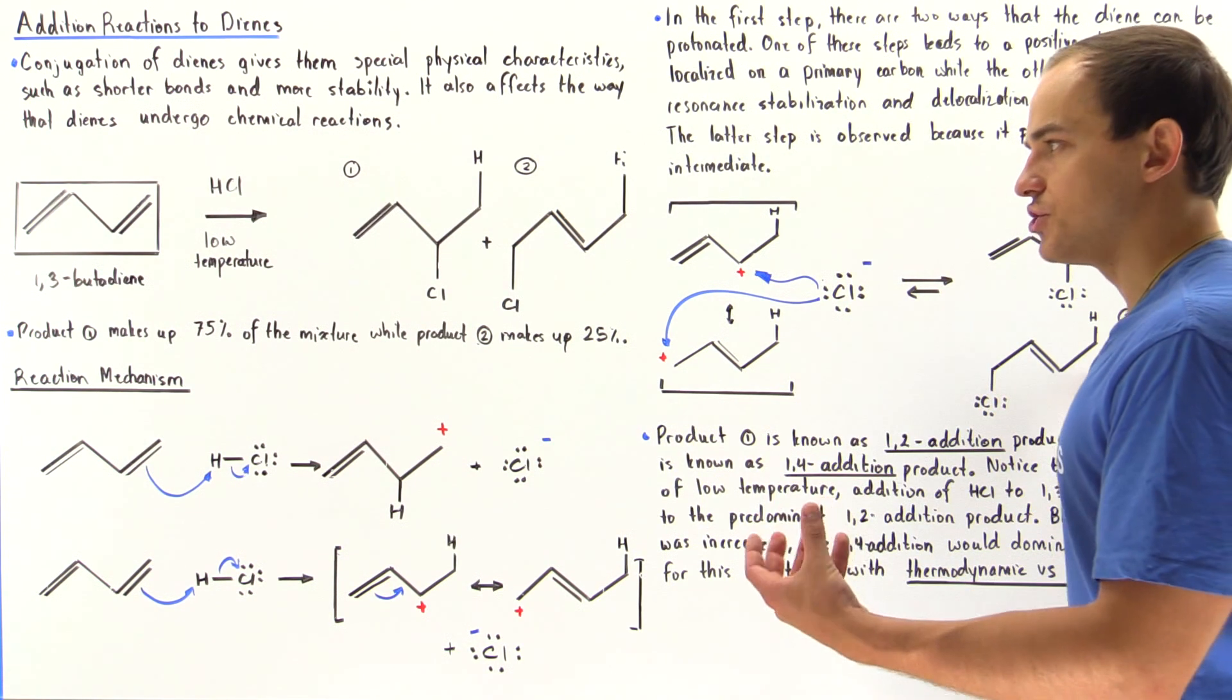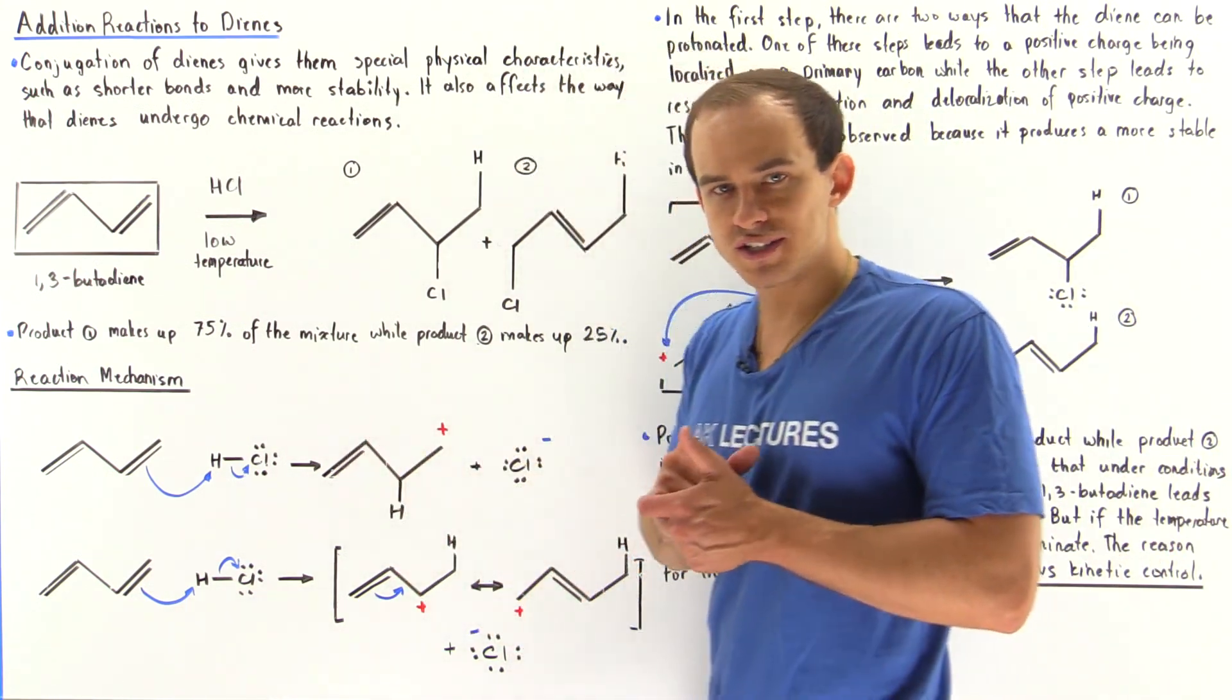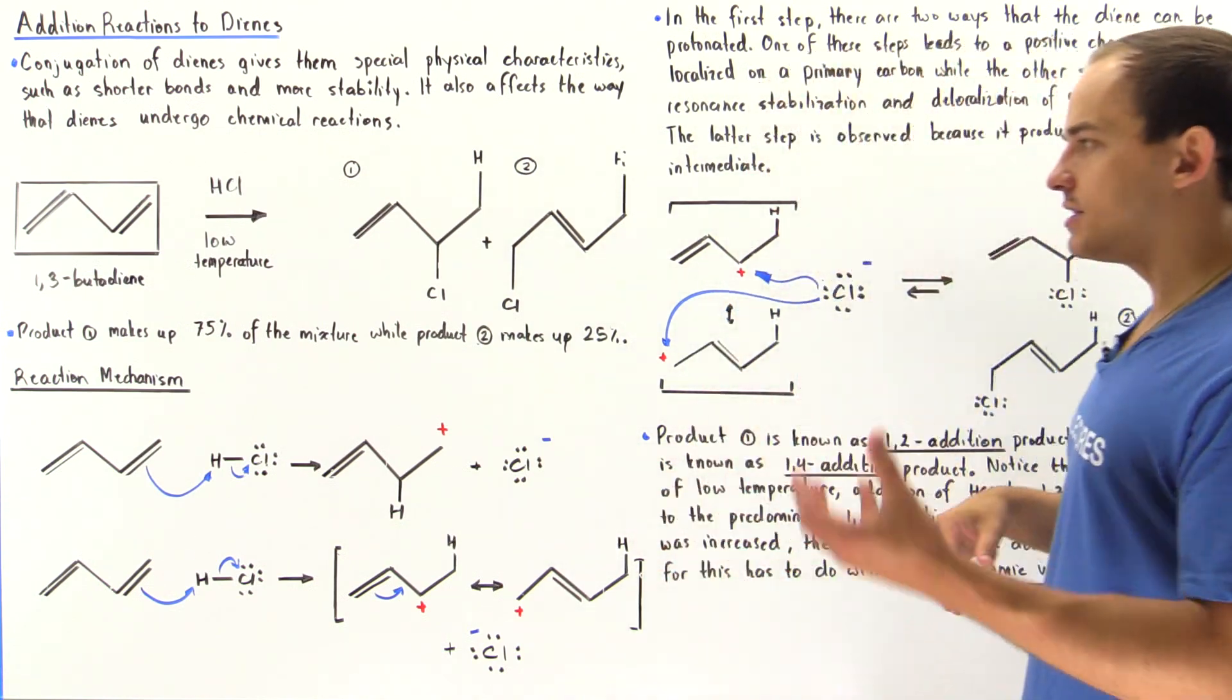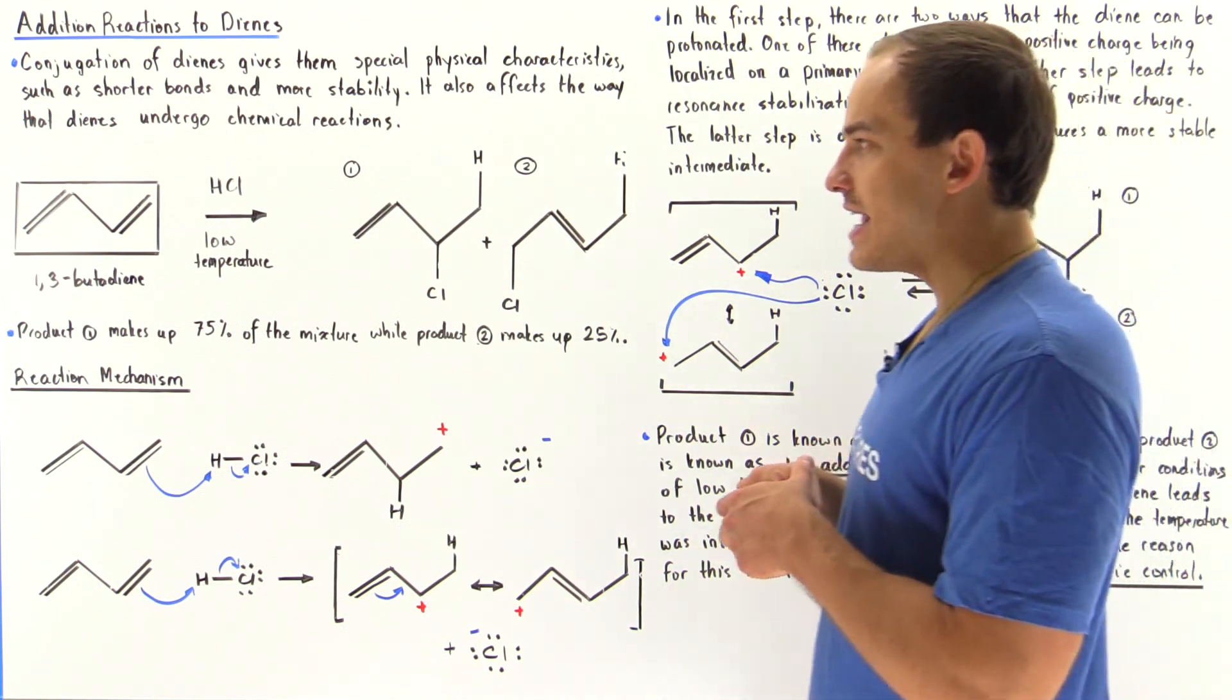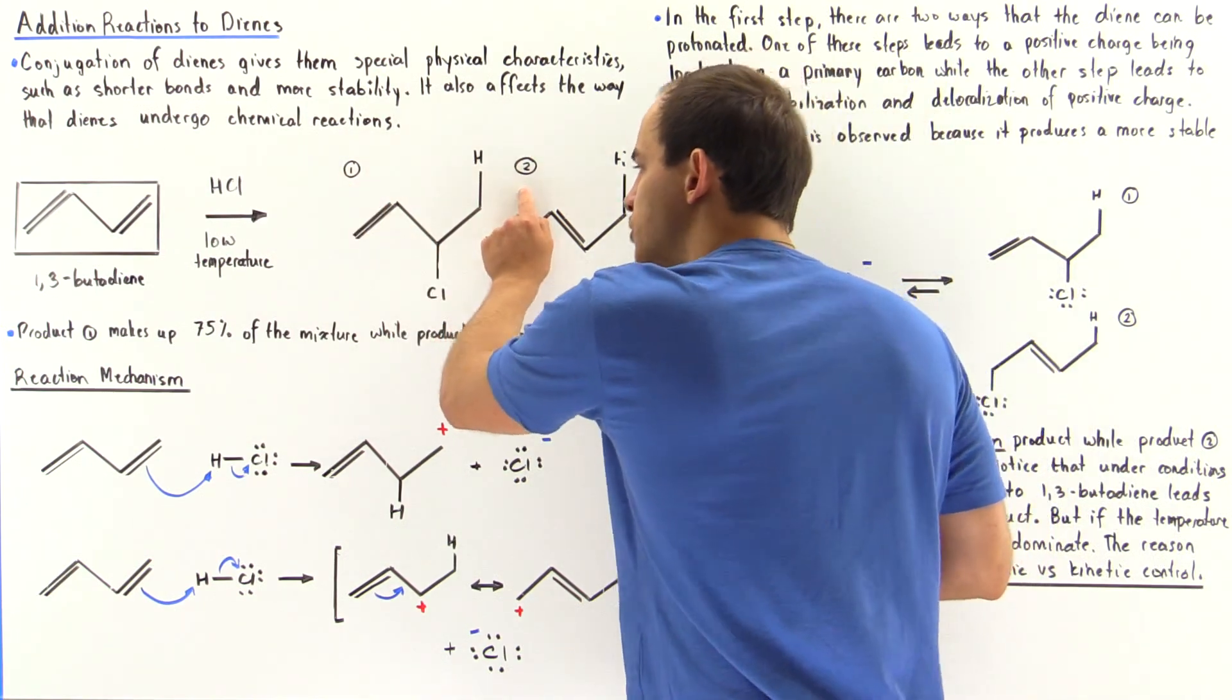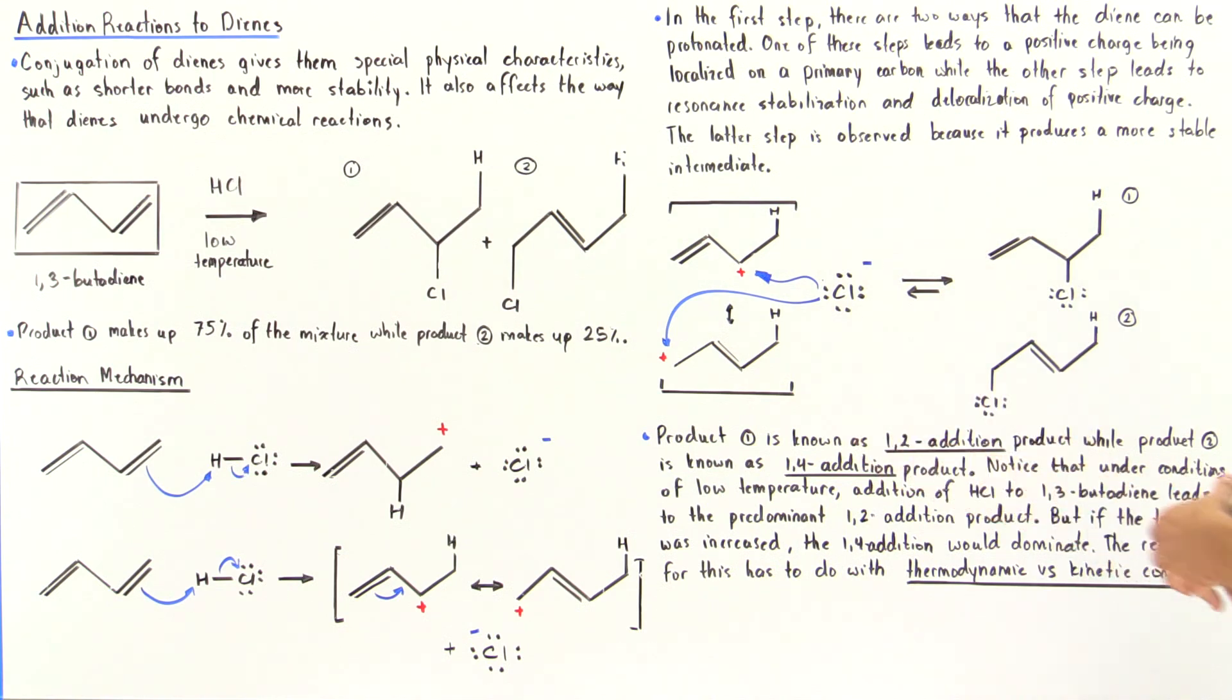Under conditions of low temperature, for example at about negative 80 degrees Celsius, we see that the one product, the 1-2 addition product, will dominate over the second product, the 1-4 addition. The reason that under low temperature conditions 1 will dominate over 2 will be explored in a future lecture.